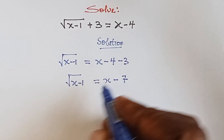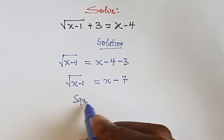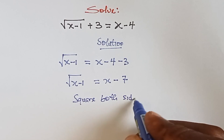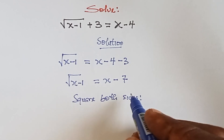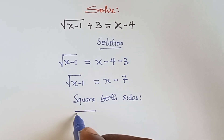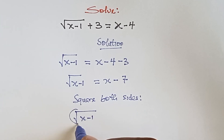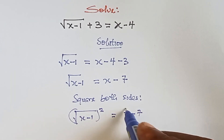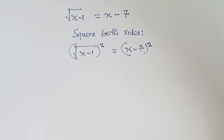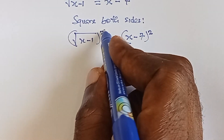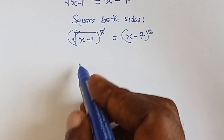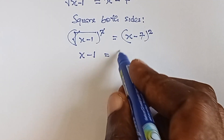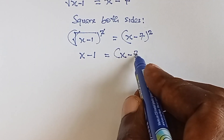From here we're going to square both sides. If we square both sides, we have x minus one squared on the left, then x minus seven squared on the right. The square and the square root cancel, leaving x minus one on the left, and x minus seven squared on the right.